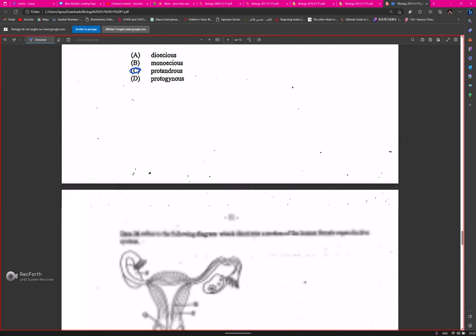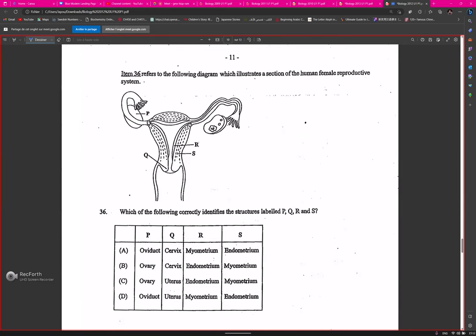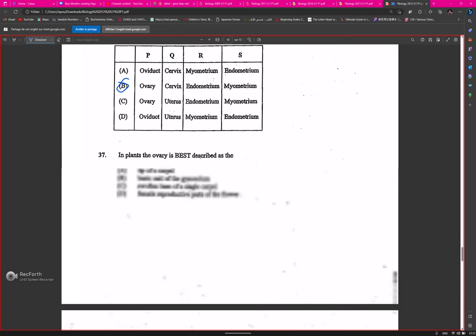Here we have a beautiful diagram of the female reproductive system. Which of the following correctly identify the structures P, Q, R, and S? P would be the ovary, Q would be the cervix, R would be the endometrium, and S would be the myometrium. As a biology student, you should be able to label these like a pro.